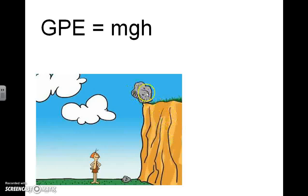So this boulder has gravitational potential energy that could be released and turned into kinetic energy if someone were to push it off the cliff or maybe wind were to move it and cause it to fall. Then we would see it convert into kinetic energy, which is the energy of motion.